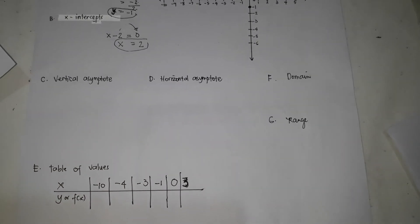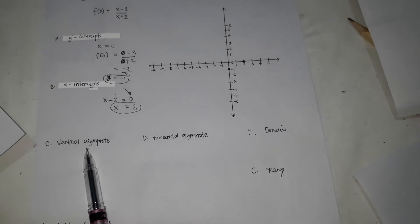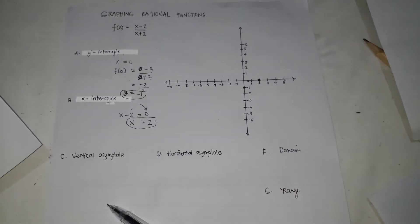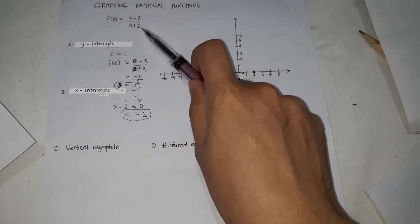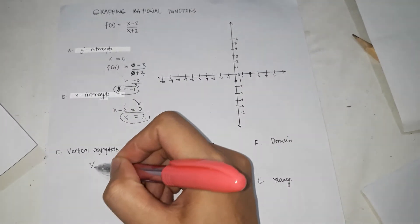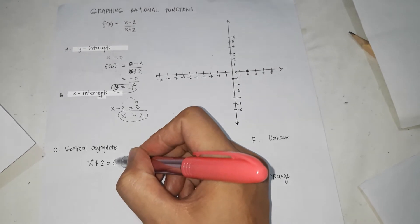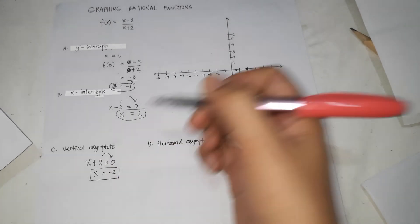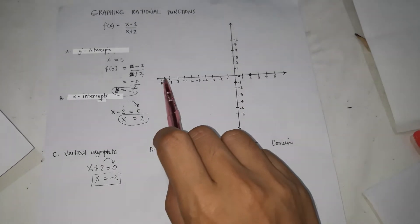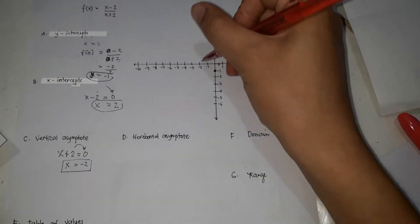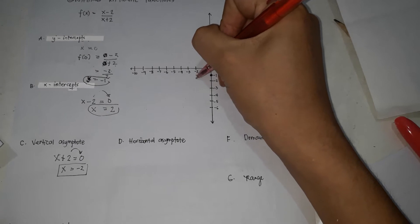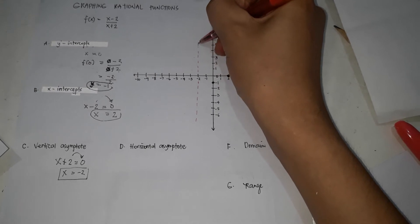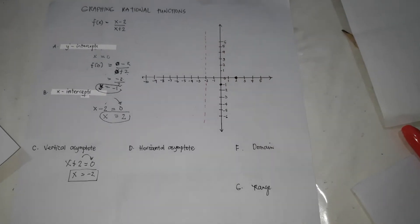To get the vertical asymptote, take the denominator and equate it to zero. So x plus 2 equals 0; transpose 2, and x equals negative 2. That is our vertical asymptote. Find negative 2 on the x-axis and draw a vertical line through it.